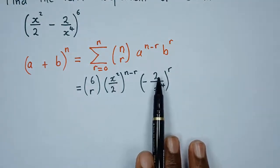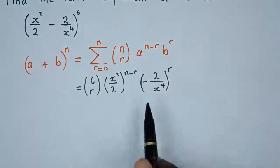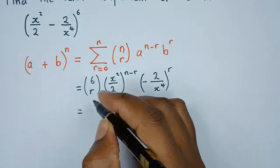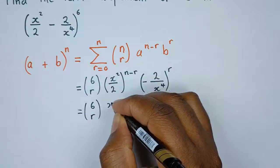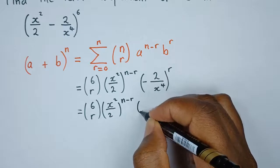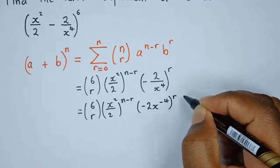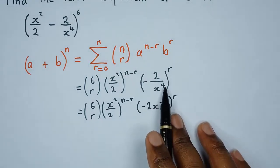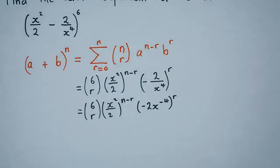We're going to focus on the powers of x only. Looking at this expression, we can write it as C(6, r) times (x squared over 2) to the power (n minus r), and the second part as (negative 2 · x to the power negative 4) to the power r — since x to the 4 in the denominator moves to the numerator as a negative power. The powers of x must add up to zero.